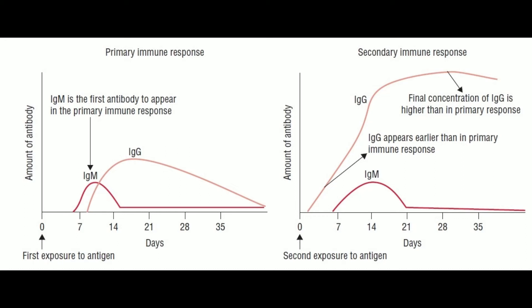Primary VS Secondary Immune Response: 12 Differences. In a primary immune response, naive B cells are stimulated by antigen, become activated, and differentiate into antibody-secreting cells that produce antibodies specific for the eliciting antigen.